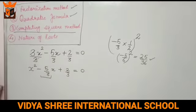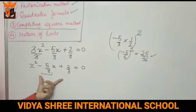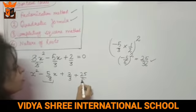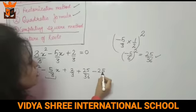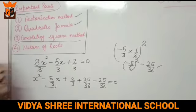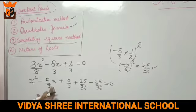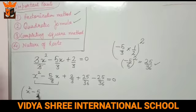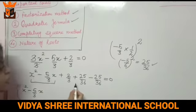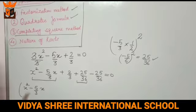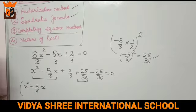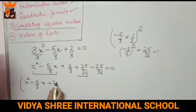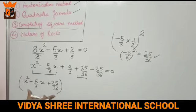This number 25 by 36 is both added and subtracted in the equation. The second step is complete. In the third step, we take the first two terms plus the added term inside one bracket. The subtract term and the constant come outside. The three terms inside form a perfect square using the identity a squared minus 2ab plus b squared.